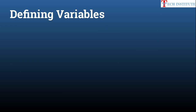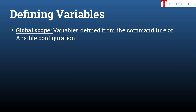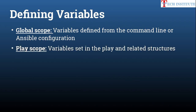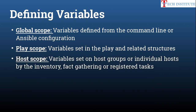There are a couple of methods for defining a variable in Ansible. The first is global scope — where you define your variable on the command line when running 'ansible-playbook', or in an ad hoc command, or in the Ansible configuration file. The second is play scope, where you define variables inside the playbook or in a task. This is the more convenient and commonly used method.